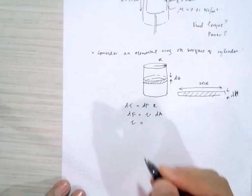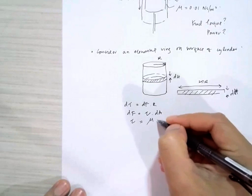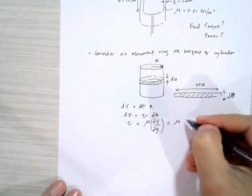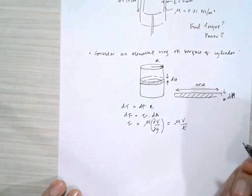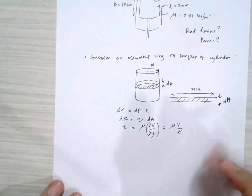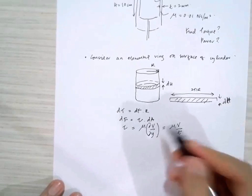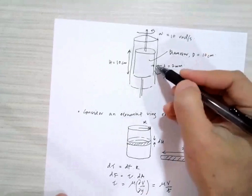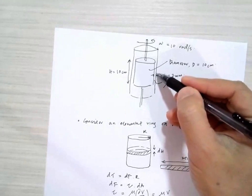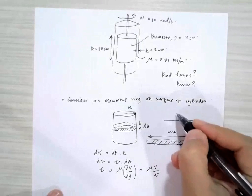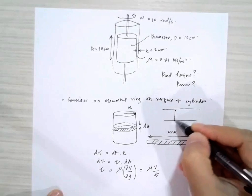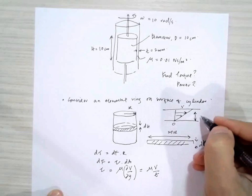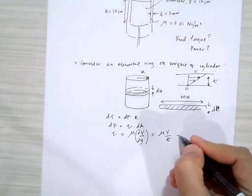The shear stress τ is equal to μ dv/dy, which equals μ dv/dy divided by the oil thickness. We're considering the velocity gradient on the cylinder compared to the velocity on the outside cylinder, which gives us a linear velocity profile.